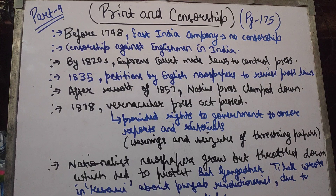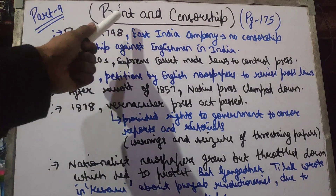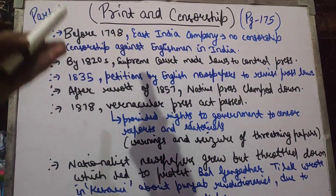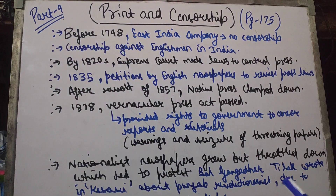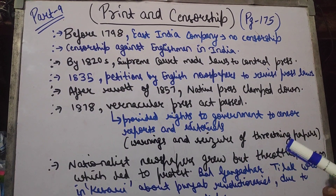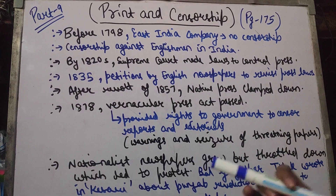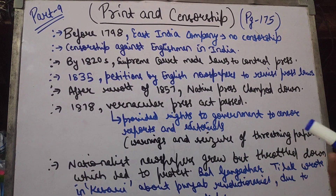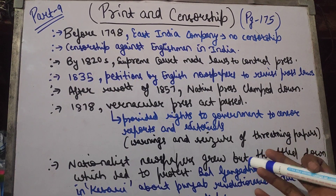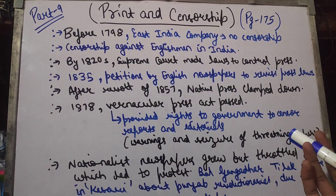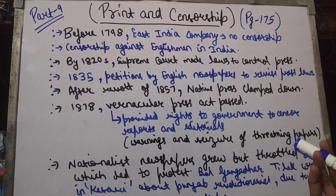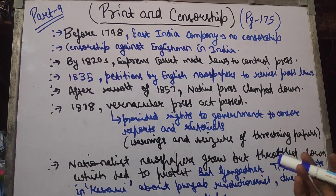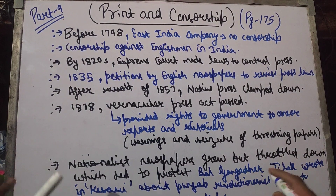Let's get started with the video. If we talk about print and censorship — we have already talked about print — now let's talk about censorship. Censorship means to check something wrong; if we check something or remove something, we remove some parts. But if we talk about print culture, then we will read further.